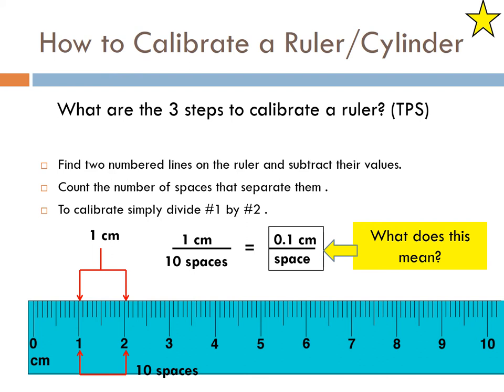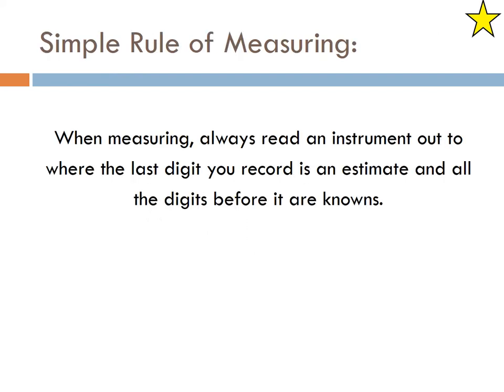So what does that actually mean? When measuring, always read an instrument out to that last digit you record is an estimate. So all the digits before that are known. So you should always have a little guess at the end of each measurement.